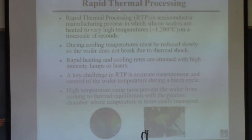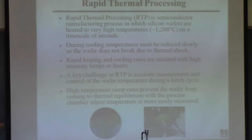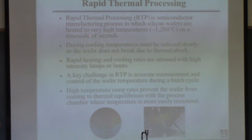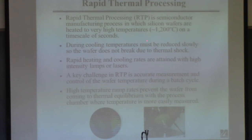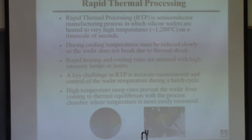This process is called rapid thermal processing. The idea is to heat up a silicon wafer very quickly to a very high temperature — about 1,200 degrees — in seconds. It's a very fast and very demanding process. Then you have to cool the wafer back down, but much more slowly than you heated it up, because otherwise the wafer will crack or break.